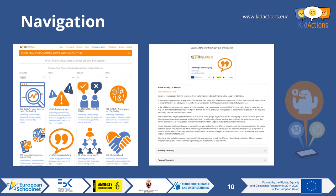Clicking on any activity takes you to a separate page showing learning outcomes, time required, required resources, key questions to guide the activity, and the activity instructions. Above the instructions you can download a PowerPoint presentation containing all the materials you need — worksheets, cards, and other printable items are provided in those slides. Beneath the instructions, accessible via an accordion menu, is a PDF download link for the instructions so you can print and use them offline.